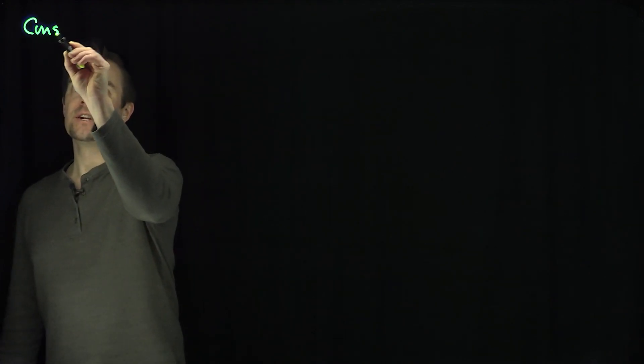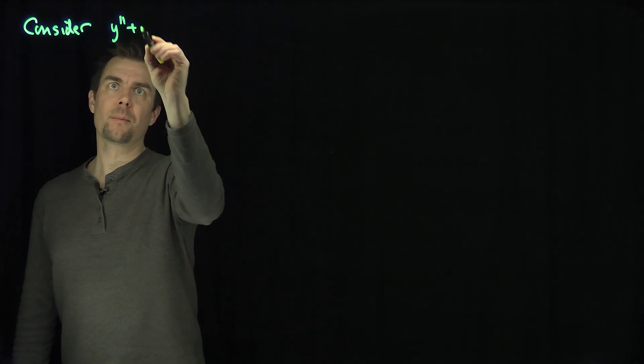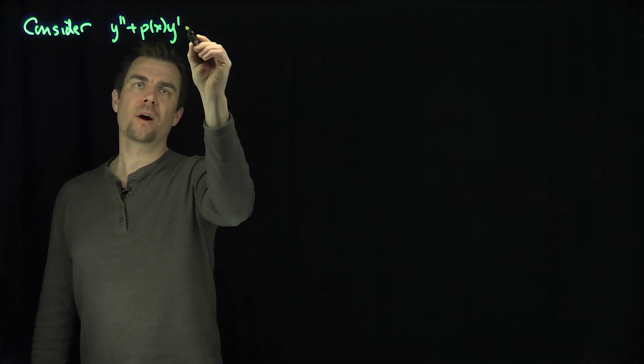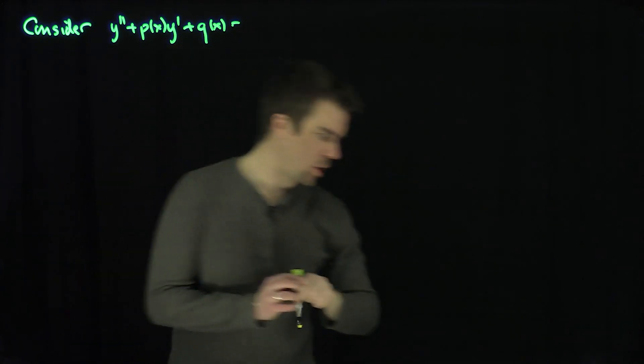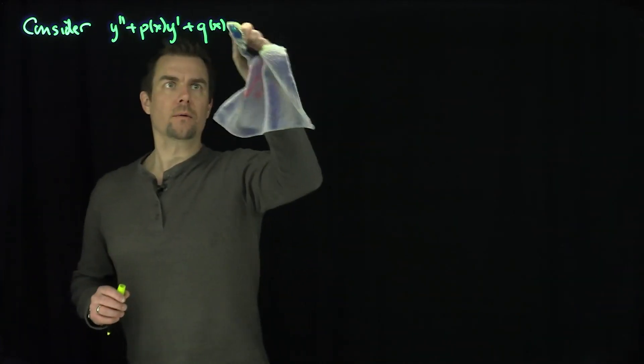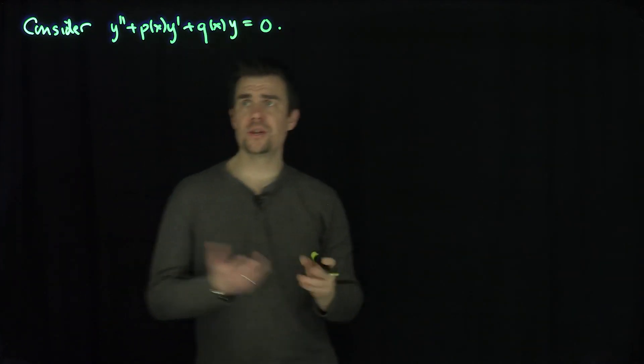Hello, students. In this video, we'll discuss how to change the coordinates of a second-order linear differential equation and see instances where this change of coordinates will help us solve a differential equation of a certain form. So let's consider our standard linear second-order differential equation: y double prime plus p of x, y prime plus q of x, y is equal to zero — homogeneous.